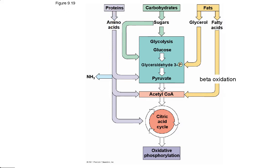Proteins are broken into amino acids. The basic idea is: take the big macromolecule, break it into small monomers, and then feed it into the system. You'll notice that when you look at all these reactions, there are no nitrogens involved — it's just carbons, oxygens, and hydrogens. So where does the nitrogen from your protein groups go?